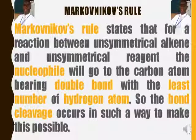Markovnikov's rule states that for a reaction between an unsymmetrical alkene and an unsymmetrical reagent, the nucleophile will go to the carbon atom bearing the double bond with the least number of hydrogen atoms. The bond cleavage occurs in such a way to make that possible. Markovnikov's rule is applied when the reaction is between unsymmetrical reagents and an unsymmetrical alkene.